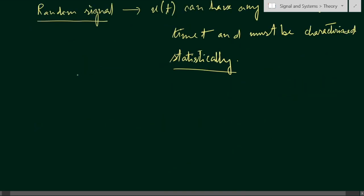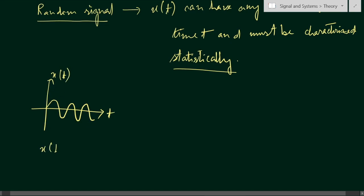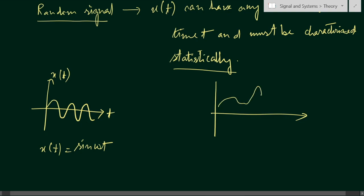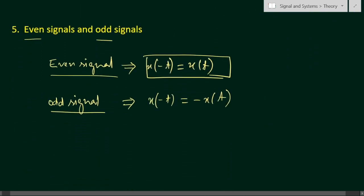For example, a sine wave is a deterministic signal because we can represent it as x(t) equals sin(ωt), where ω is the angular frequency equal to 2πf. A random signal, on the other hand, can take any values and cannot be expressed in mathematical form — it can only be characterized using statistical procedures.